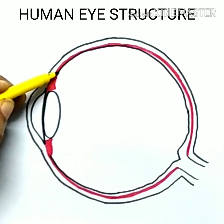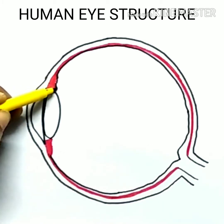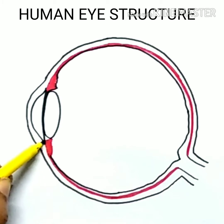The vitreous body is a clear gel that fills the space between the lens and the retina of the eyeball of humans and other vertebrates.